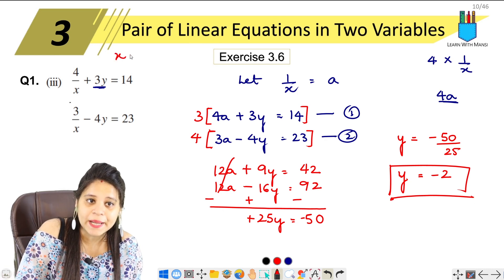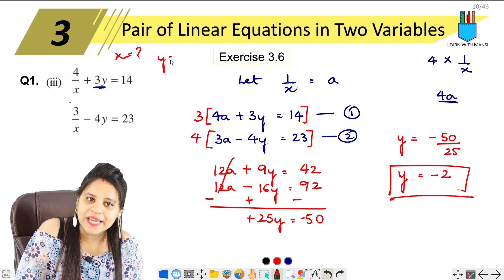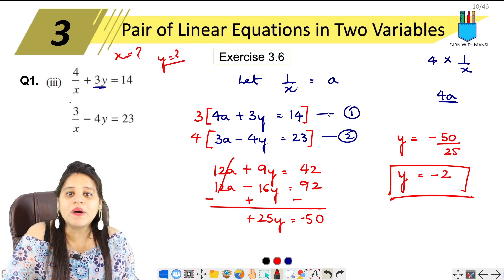So this will be minus 2. Now here we have direct y ki value. When we solve this question, we need x and y ki value.